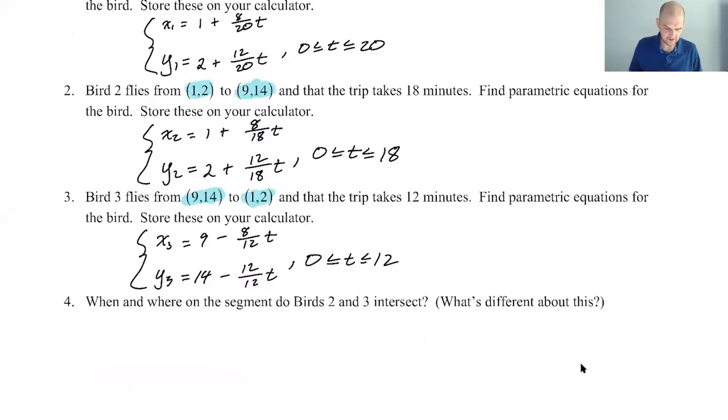So let's go back and see if we can understand the problem. We didn't actually do anything yet. We just wrote the parametric. That's the first step in almost every parametric problem is to write your parametric equations. And then you got to use them for stuff. When and where do birds 2 and 3 intersect? We haven't actually done a problem like this yet, which is sort of interesting.